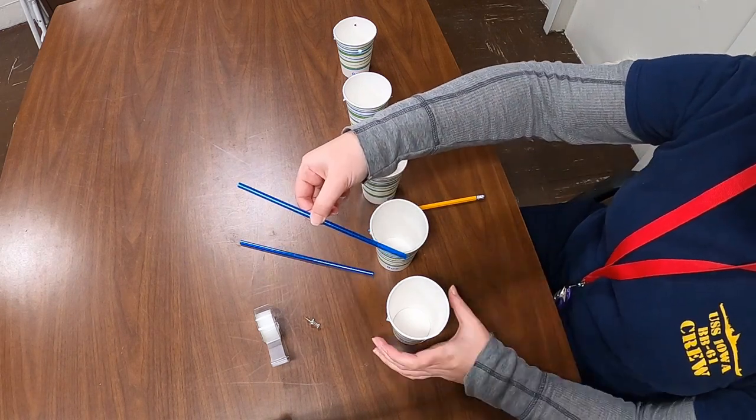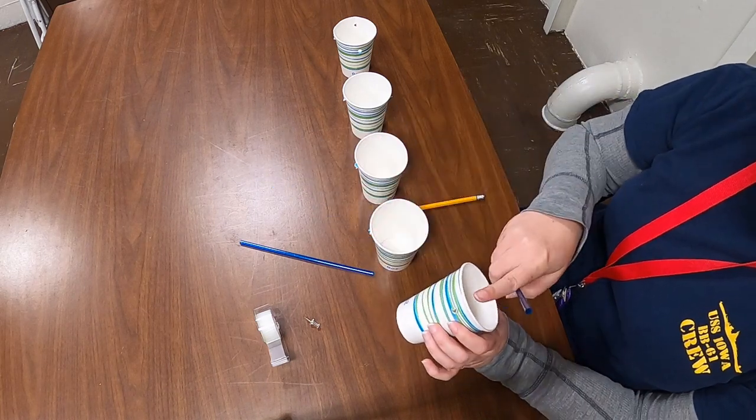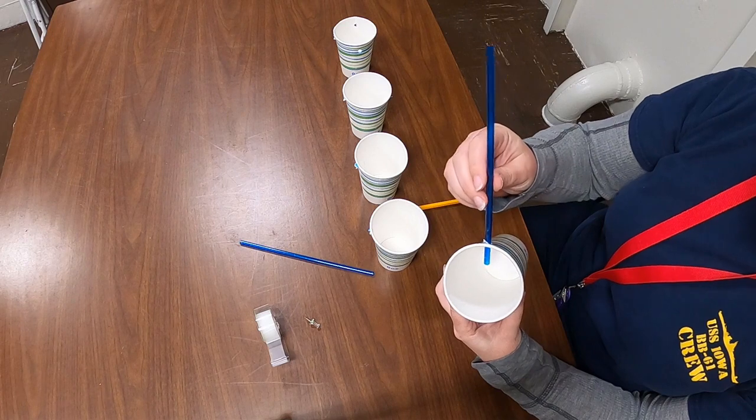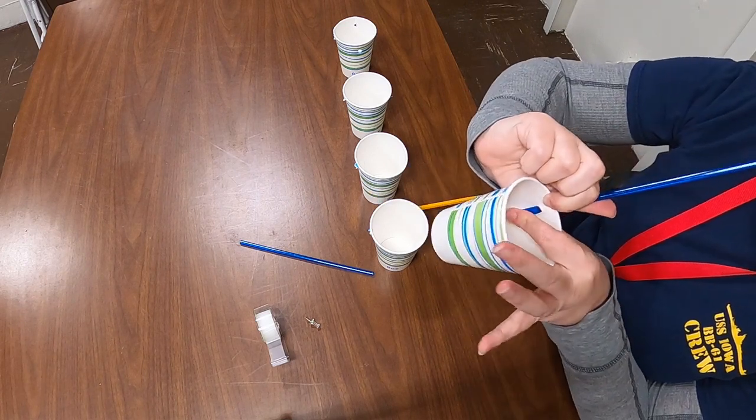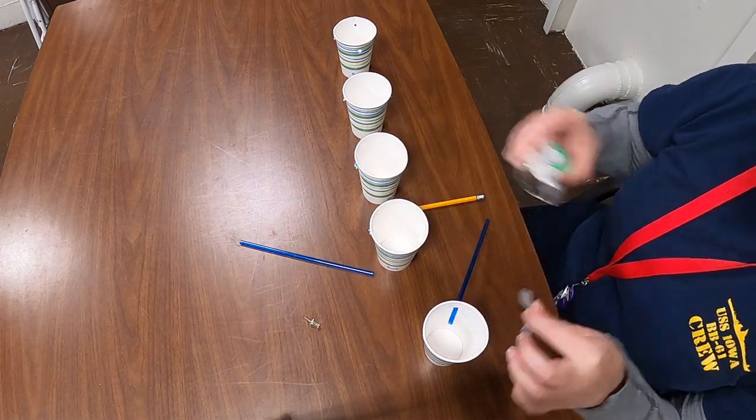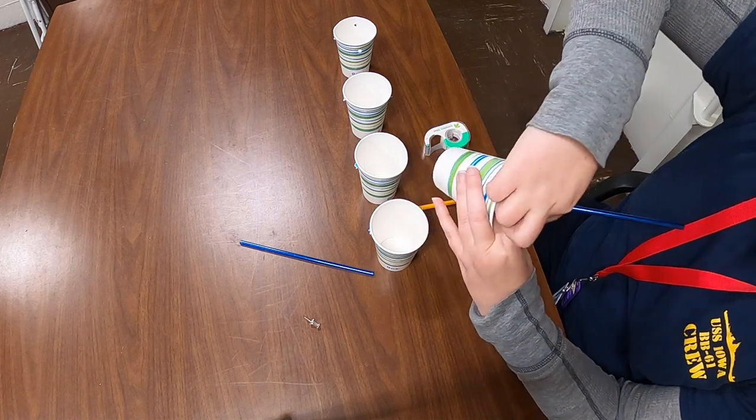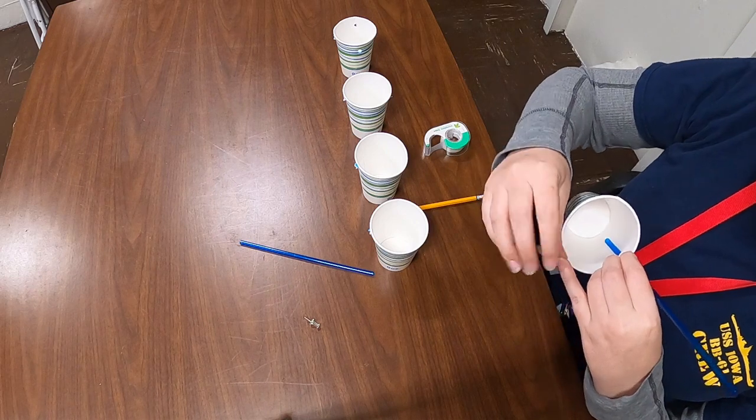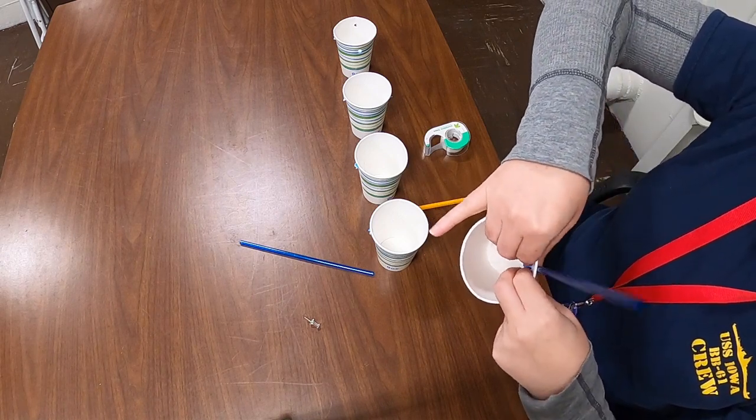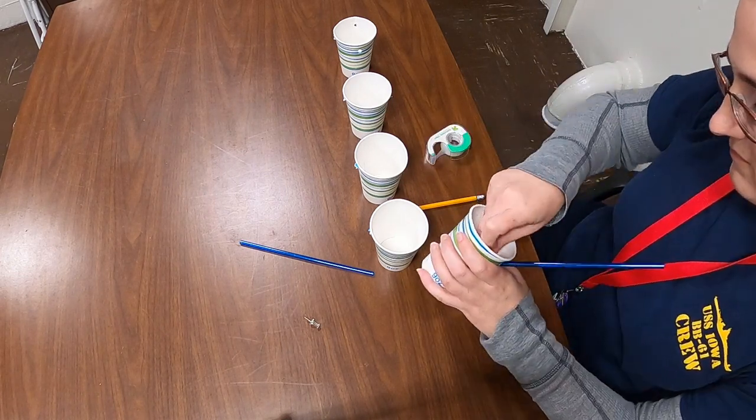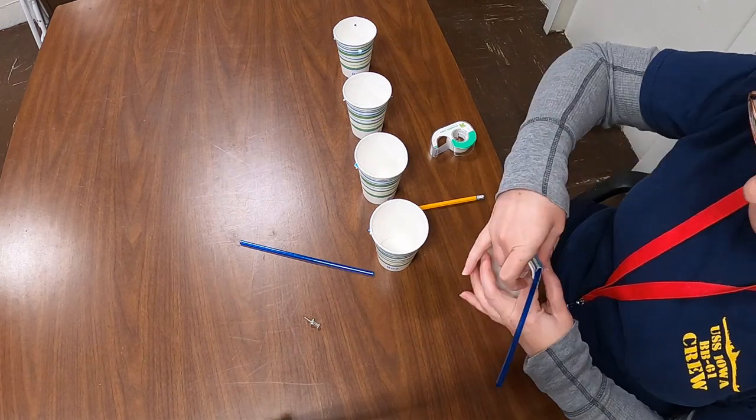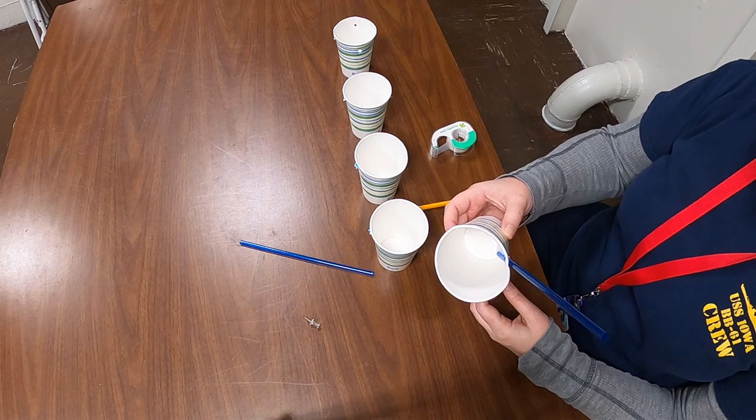Next you're going to take one of your straws and you're going to insert it into one of your cups that only has one hole in it. Just push it through like that until we have a little bit on the inside. Next we're going to take our tape and make sure that the straw is nice and taped to the inside of the cup. I'm going to try to tape it down really good, so use a bit more tape than you normally would. So we have our first straw taped into our first cup.